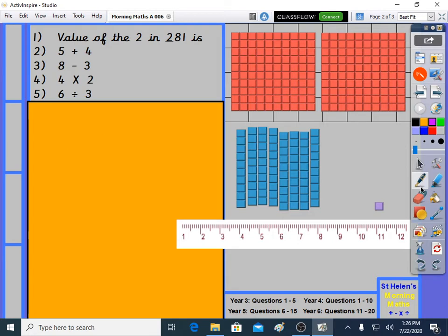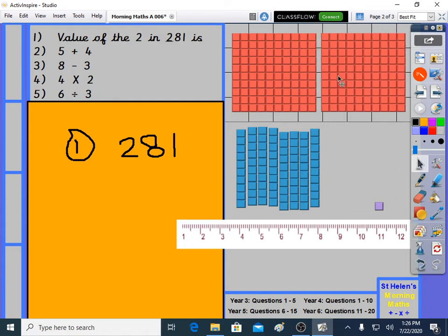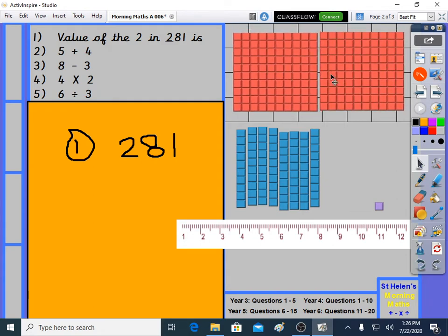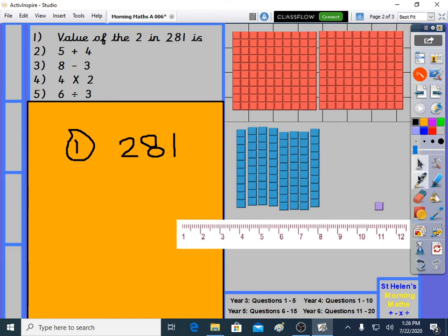Question 1 in year 3, I'm going to write in a different place. I'm going to write it here now, because I've got pictures on the board. Question 1, the value of the 2 in 281, that's what that number says, 281. So we have a picture of 281 over here. This is 100, there's 100 little squares in there. This is another 100. So those red blocks, all 100, 200 of them, that represents this 2, because it's in the hundreds column.